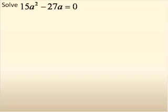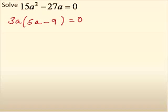So, when I look at this one, it does have a greatest common factor, and it is 3a. So, I need to pull the greatest common factor out, and I will have 3a times 5a minus 9 equal to zero.